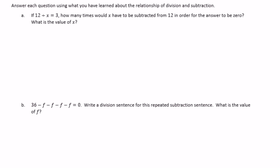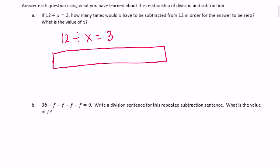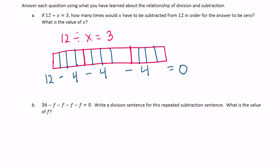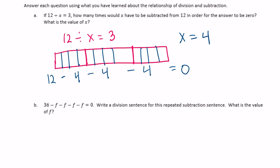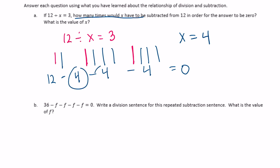Exercise 2. If 12 divided by x equals 3, how many times would x have to be subtracted from 12 in order for the answer to be 0? What's the value of x? 12 divided by x equals 3, so I split it into 3 groups — 12 divided by 3 means there need to be 4 in each group. So 12 minus 4 minus 4 minus 4 equals 0, meaning x equals 4 and x would need to be subtracted 3 times.